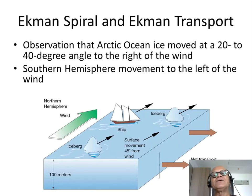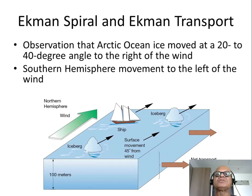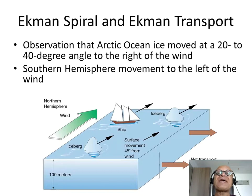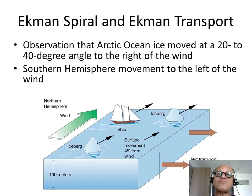Ekman was a smart mathematical student. He sat down and figured it out, writing a very nice, very short thesis to show how the Coriolis effect actually creates this drift of ocean currents and ocean transport away from the winds.